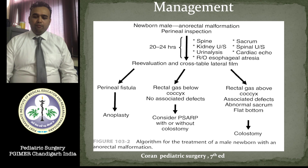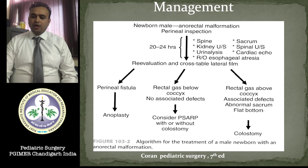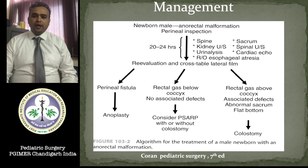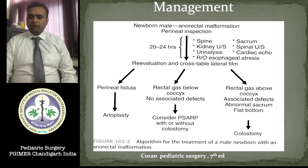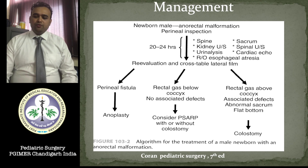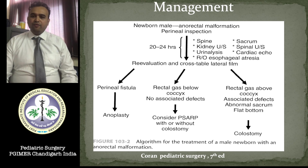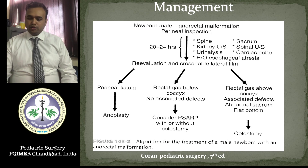Patients with low ARM or perineal fistula are managed with anoplasty. Patients with rectal gas below the coccyx or PC line, with no associated defects and not sick, can be treated with primary PSARP without colostomy or with colostomy. Patients with rectal gas above the coccyx, above the PC line, with associated defects, abnormal sacrum, or flat bottom can be treated with the conventional three-stage procedure: colostomy, PSARP, and colostomy closure.